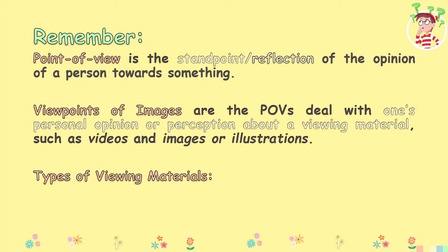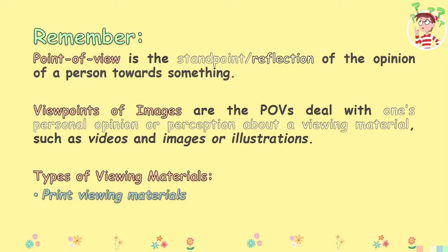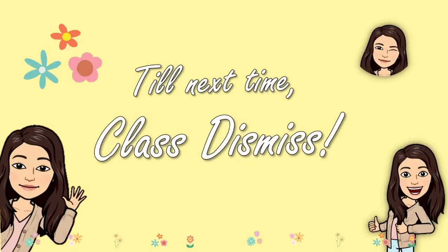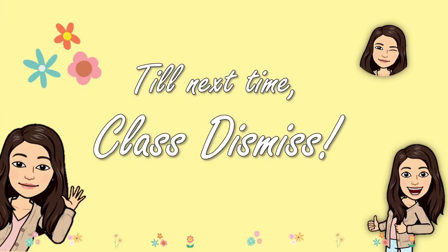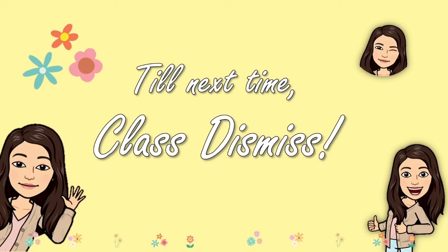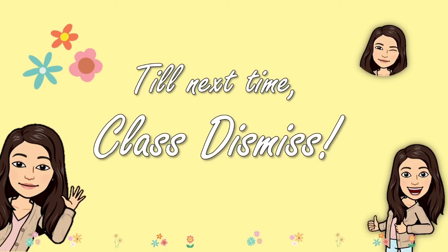Remember, learners: point of view is the standpoint or reflection of the opinion of a person towards something. Viewpoints of images are the points of view that deal with one's personal opinion or perception about a viewing material such as videos and images or illustrations. We also have two types of viewing materials: print viewing materials and non-print viewing materials. That is it for our lesson today. I hope you learned something in this video. Once again, I am Mom Sharnes, your English 5 teacher. Till next time — class dismissed.